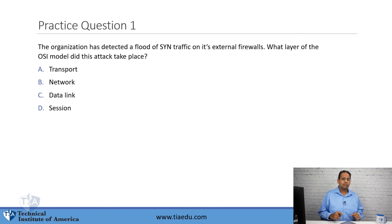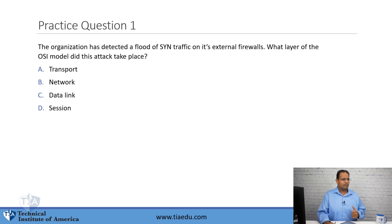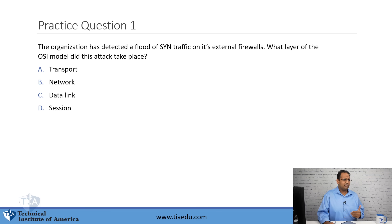Question number one: The organization has detected a flood of SYN traffic on its external firewalls. What layer of the OSI model did this attack take place? A, transport. B, network. C, data link. D, session.